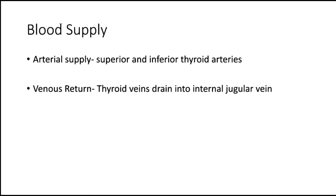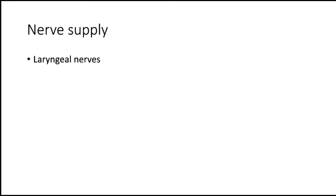Blood supply. The thyroid gland is supplied by the superior and inferior thyroid arteries. The venous return is by the thyroid veins, which drain into the internal jugular vein. It is supplied by the laryngeal nerves.